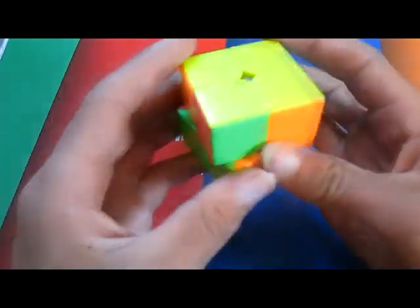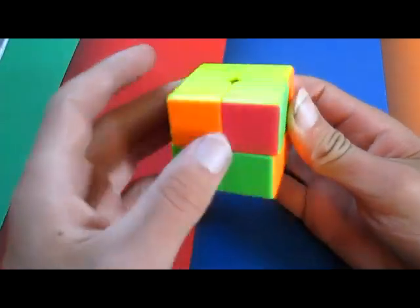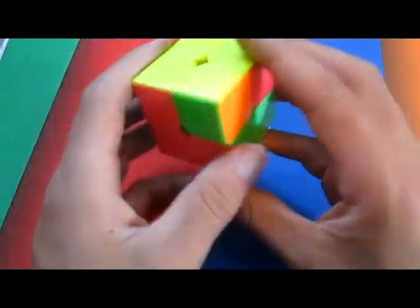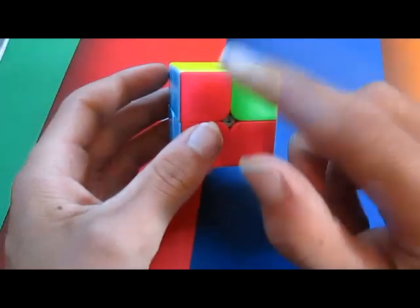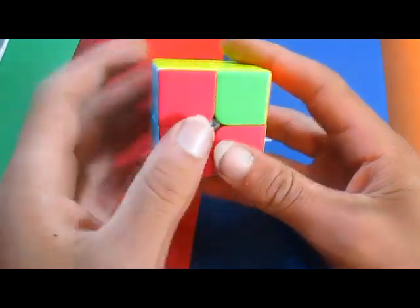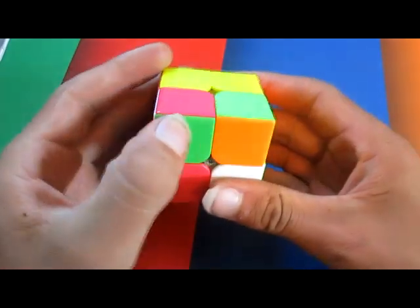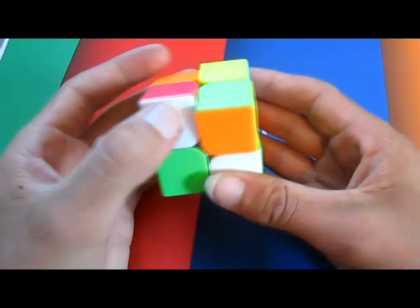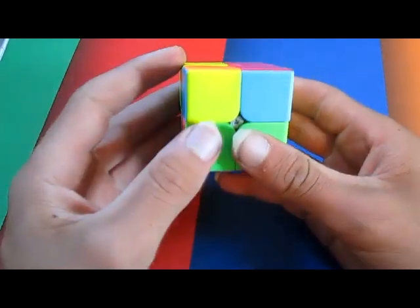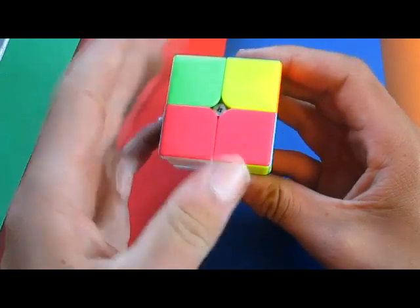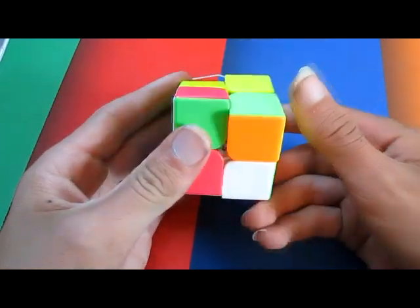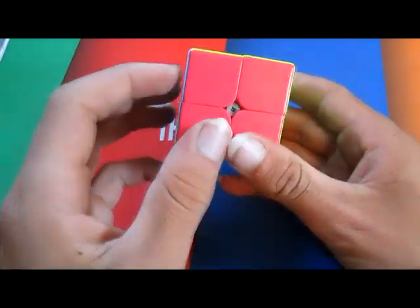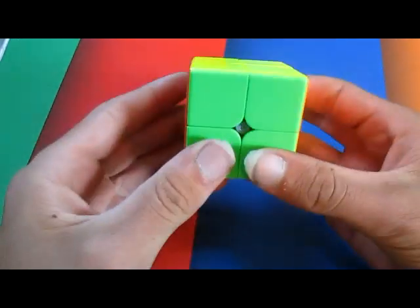So now all we need to do is switch these two edges. We can do that by just one algorithm. And so if you don't get one side solved, it doesn't matter, but if you do, then turn it to this side of the solved side, and do right, up, right down, front counterclockwise, right, up, right down, top counterclockwise, right down, front clockwise, right twice, top counterclockwise, right down, top counterclockwise. And that solves the 2x2.